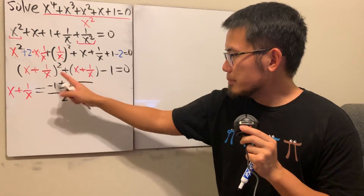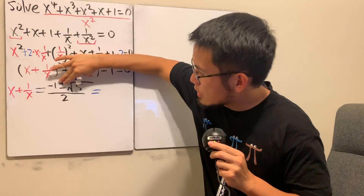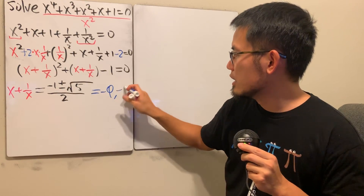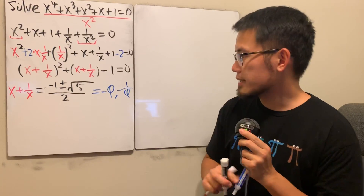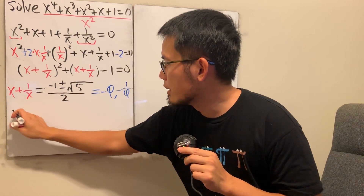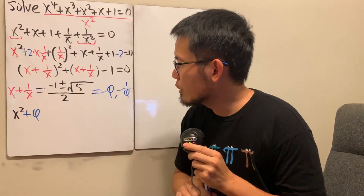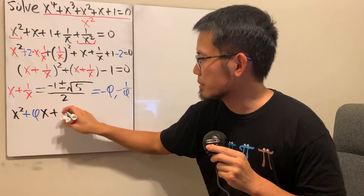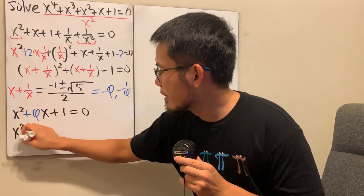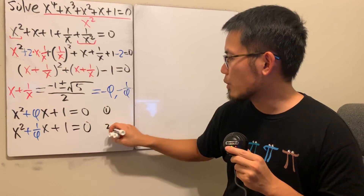Let me use golden ratio notation. Let φ be the golden ratio, so our two cases are x + 1/x = −φ and x + 1/x = −1/φ. Multiplying both sides by x gives two quadratic equations. The first is x² + φx + 1 = 0, and the second is x² + (1/φ)x + 1 = 0.